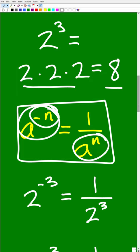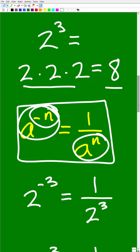So 2 to the negative third is equal to 1 over 2 to the third power. And of course, 2 to the third power is 8. So 2 to the negative third power is equal to 1 over 8.